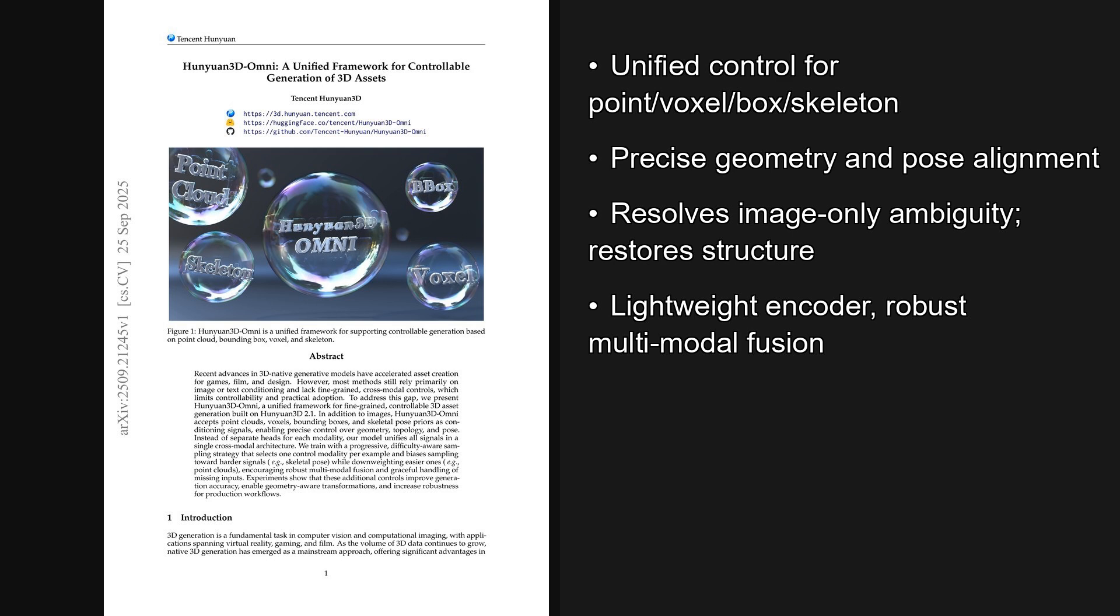The paper is titled Hanyuan 3D Omni, a Unified Framework for Controllable Generation of 3D Assets, and as we'll see later, the results are really impressive. In short, the model uses one cross-modal encoder and difficulty-aware training to improve alignment, enable geometry-aware edits, and boost robustness for production pipelines.